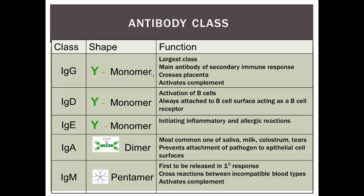IgE is another class that also has a monomer shape. These are the antibodies attached to mast cells after you've been exposed to an allergen. They are responsible for allergic reactions and help with instigating inflammation.